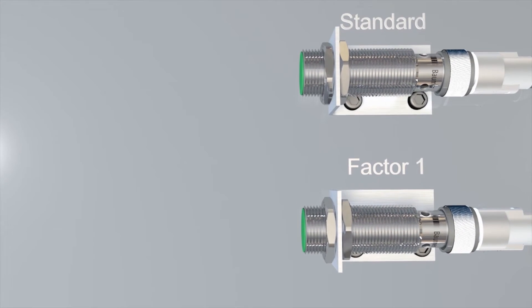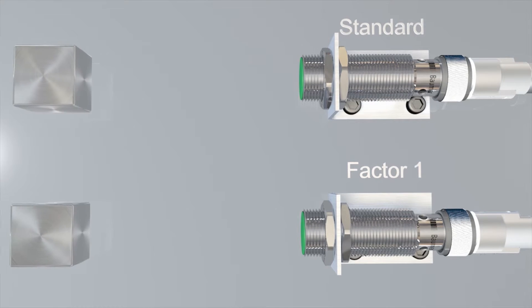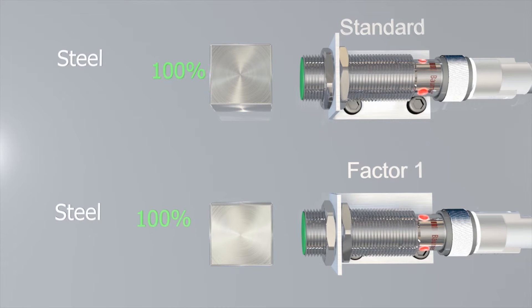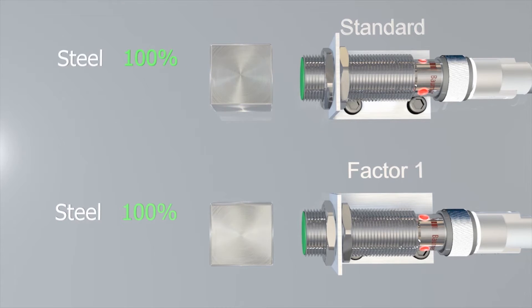Standard inductive sensors reduce the switching distance depending on the material. For example, both maintain the full 100% maximum switching distance with steel objects.